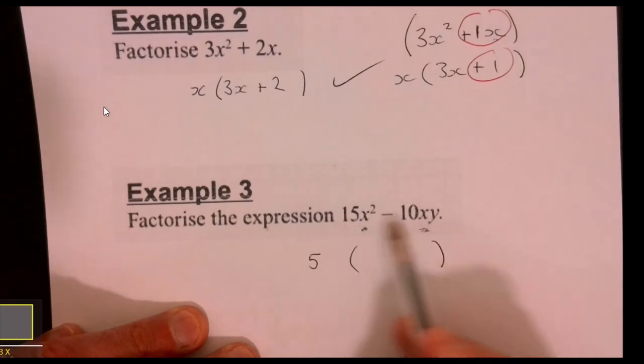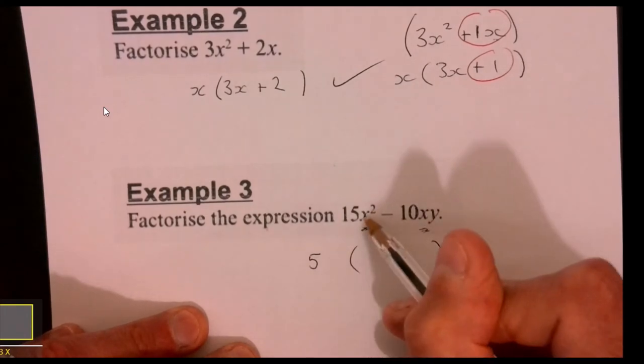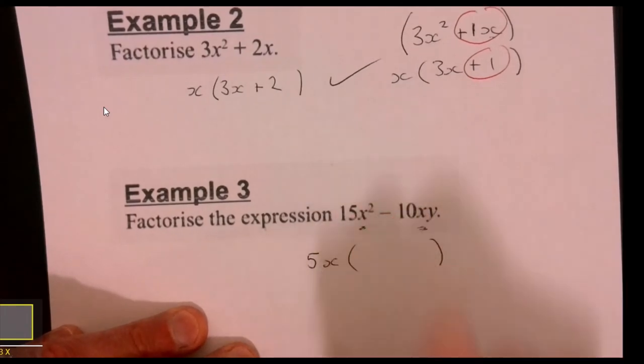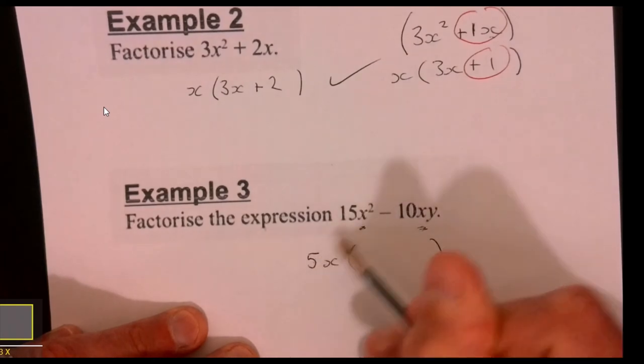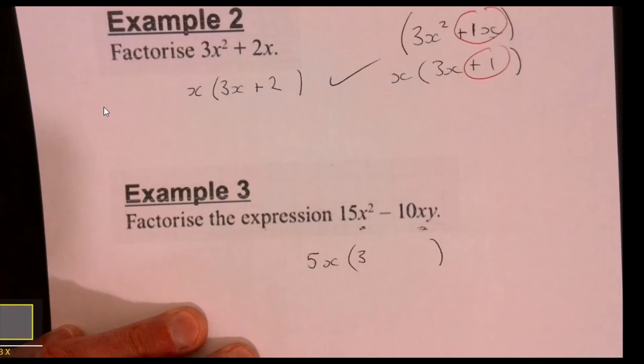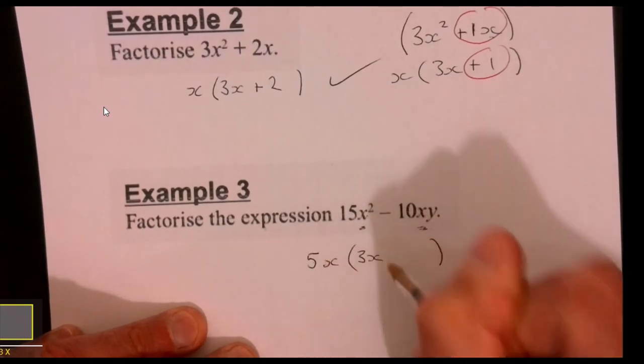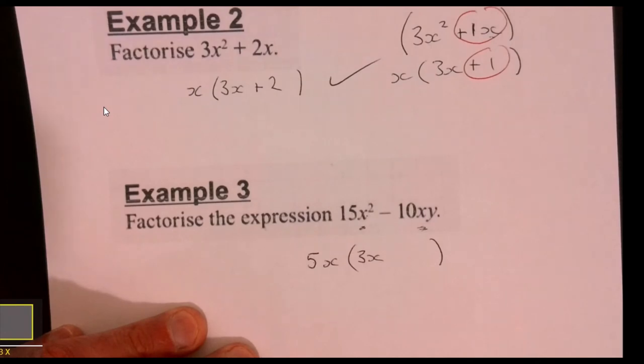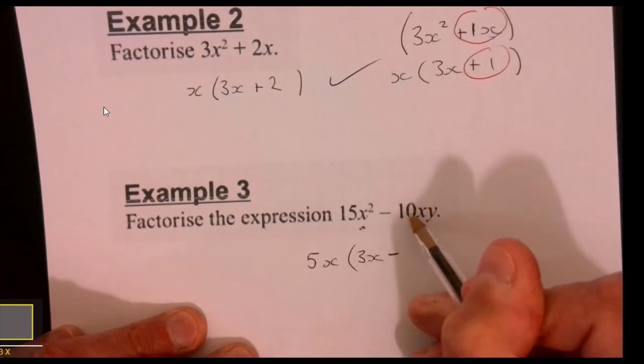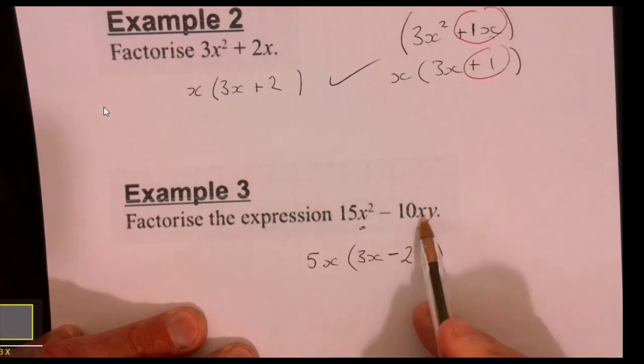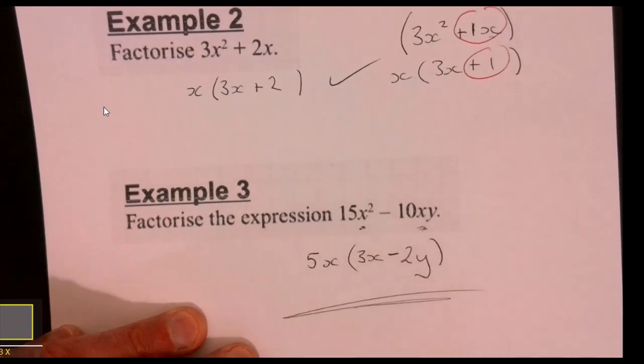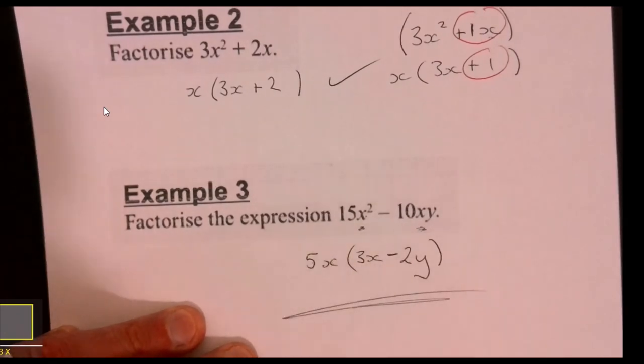What's left inside? Well, 5 multiplied by 3 is 15, and I'm going to take one x, so x times x is x squared. So that first bit works: 15x squared. I've got a minus, and then 5 times 2, so that x is over there, and it's just left with a y. There we go, that's some common factors. Just a bit of factorizing there for you.